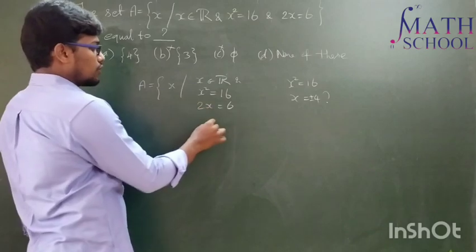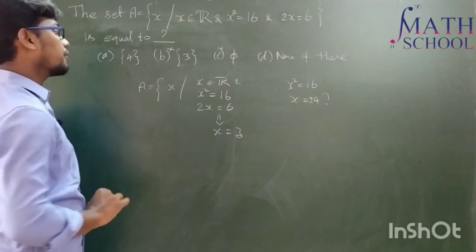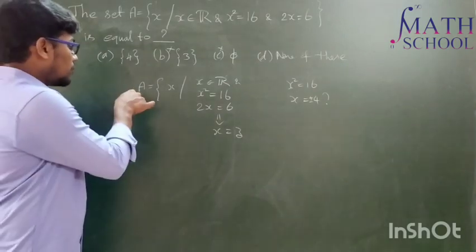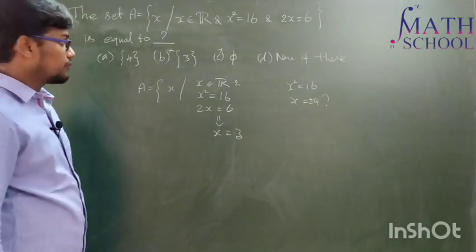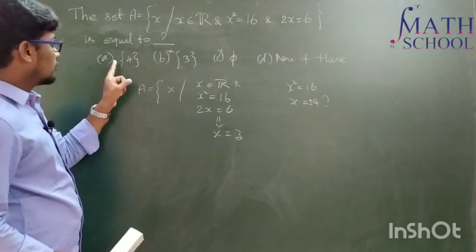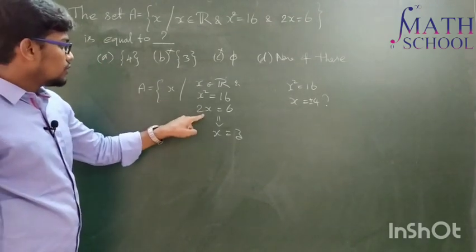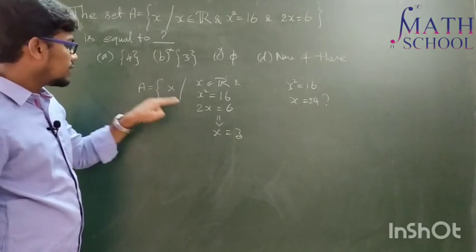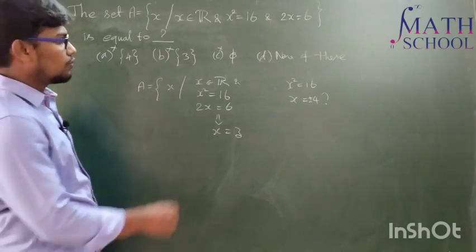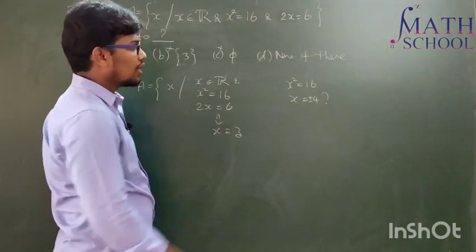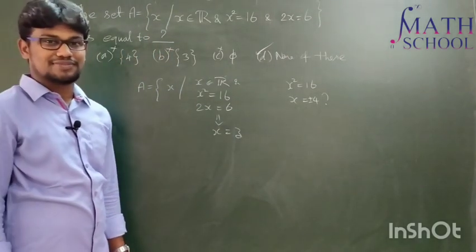The third condition says that 2x = 6. If 2x = 6, what is the x value? x value is equal to 3. So our set A should contain the value x = 3. Look at the options now. Option A remains singleton {4}. According to this data, our set A should contain the number 3, but there is no 3 here. So we can eliminate this option. Then what remains? Absolutely, none of these. So the answer is none of these. Thank you.